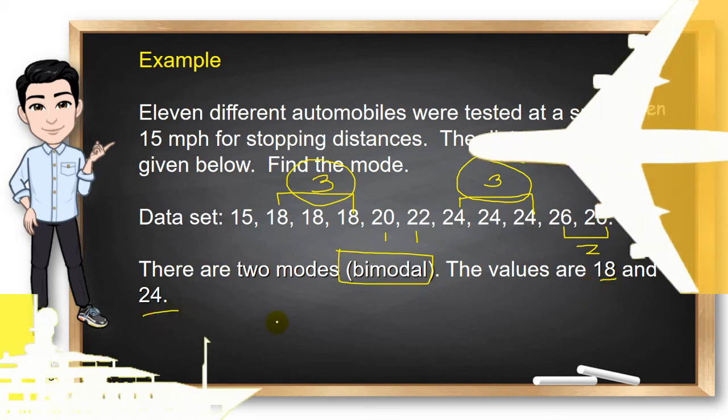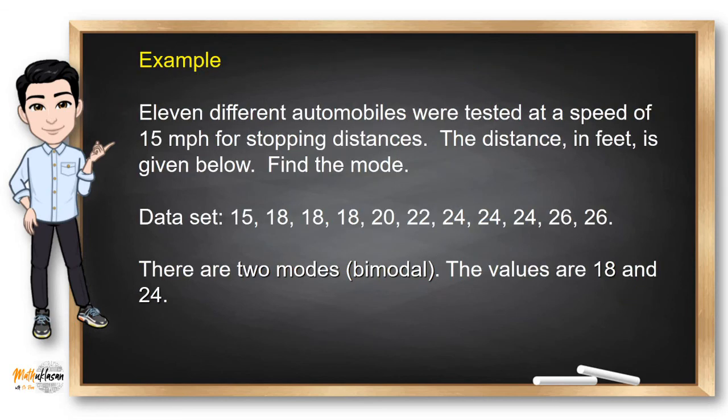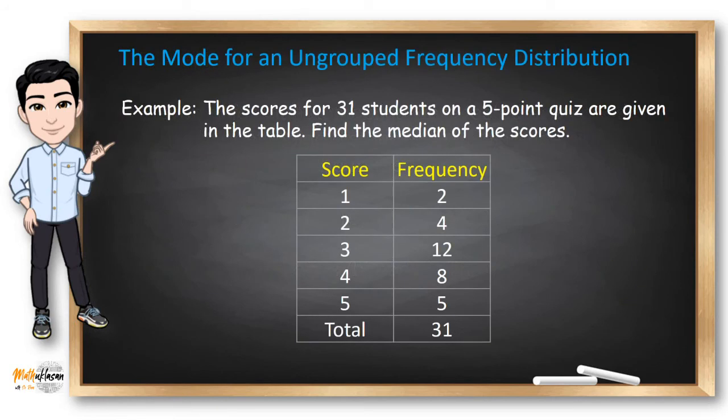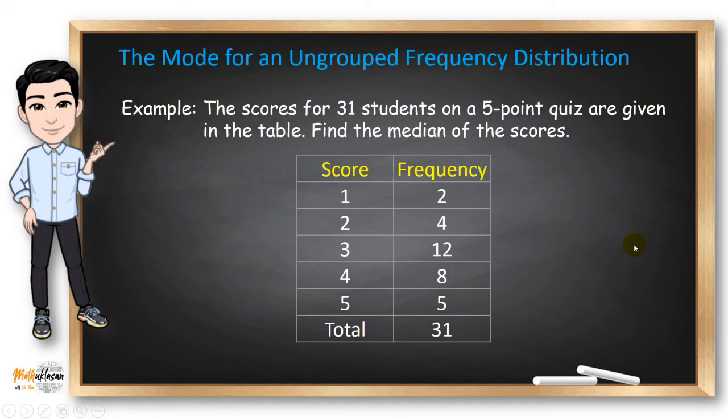If a frequency distribution table is given, it will be easier for us to identify the mode because all we need to do is to find the frequency with the highest frequency. In this case, 3 has the highest frequency, which is 12. So therefore, the mode for this given is 3.